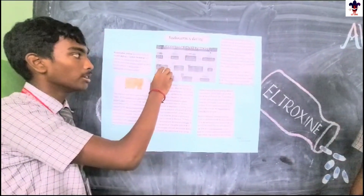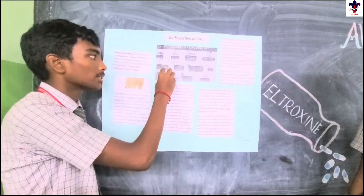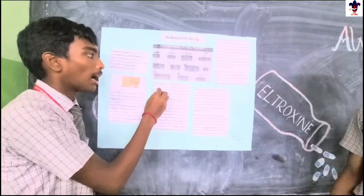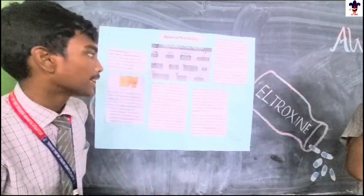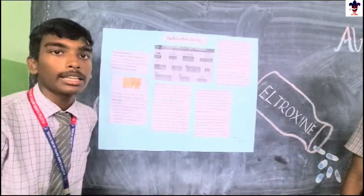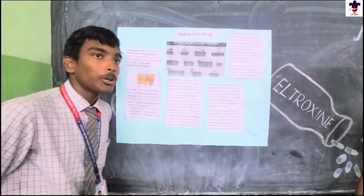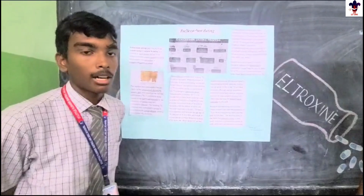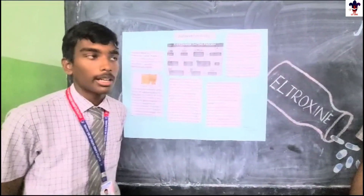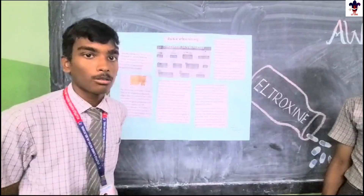Then you need to add some scintillator to the benzene sample — liquid scintillator. Count the number of decays present in it. Then the computer analyzes the data. Finally, you can determine the age of the radiocarbon sample. Thank you.